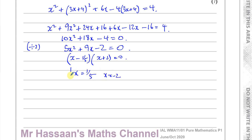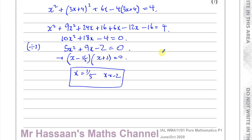The examiners want to see how you got your answers, especially in P1 where they are very strict. You have to show that you factorized properly. Writing (x minus 1/5)(x plus 2) equals 0 does not show factorization of 5x squared plus 9x minus 2, because when you expand (x minus 1/5)(x plus 2) you don't get 5x squared plus 9x minus 2 — it's five times too small. So you must be very careful.